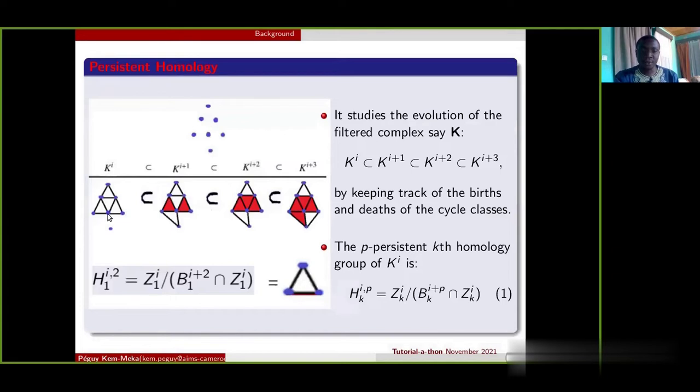For example, on this filtration, this cycle here is created at time I, so I represents its x coordinate, and it dies at time I plus 2. So I plus 2 represents its y coordinate.